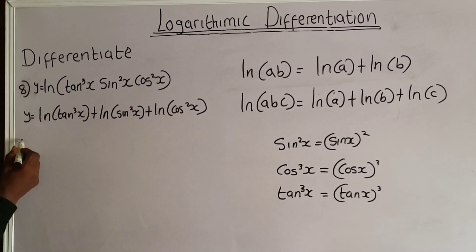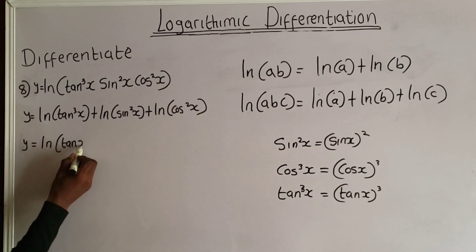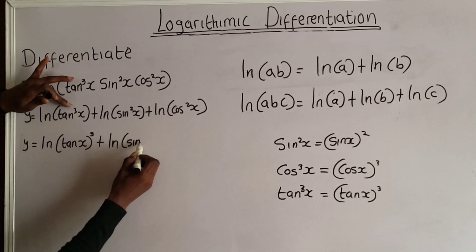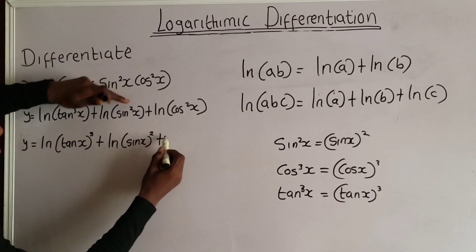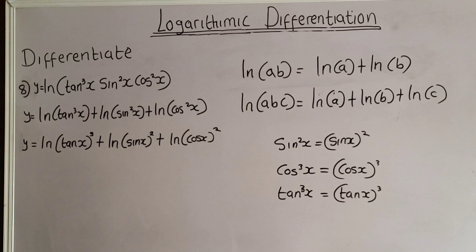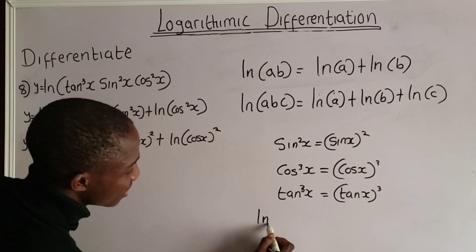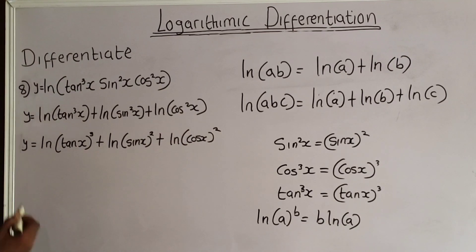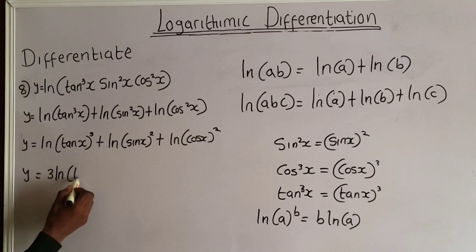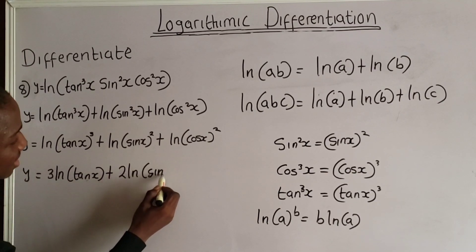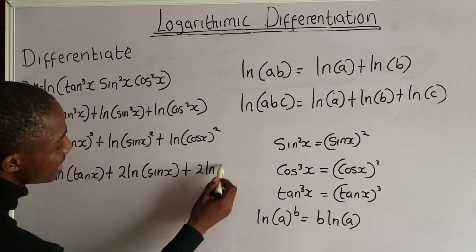Now let us use the same approach. y is equal to the natural log of tan x, and this exponent 3 will come down to the front. Plus the natural log of sin x, and this 2 will come to the front. Plus the natural log of cos x, and this 2 also comes to the front. This is because from the rules of logarithms, if we have the natural log of a to the power of b, we can write this as b times the natural log of a.